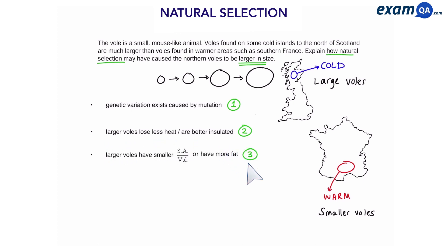Step three, larger voles have a small surface to area volume ratio or have more fat. That is the advantageous gene. So these voles will survive, reproduce or breed and pass on their genes.